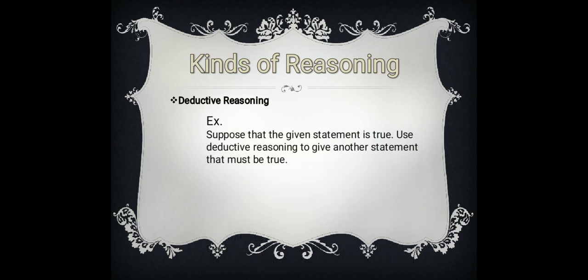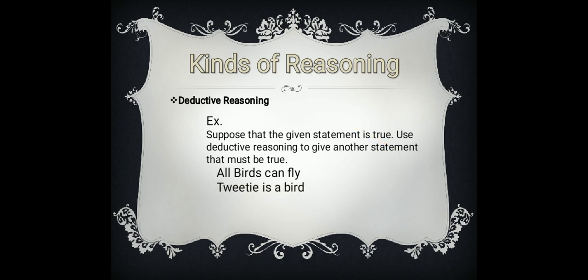Let's have an example. Suppose the given statement is true — use deductive reasoning to give another statement that must also be true. First statement: all birds can fly. From the beginning with inductive reasoning we gathered specific statements to get a general statement, but now we start from a general truth. Second statement: Tweety is a bird. So meaning, we can derive a third statement that is also true from these two preceding statements.